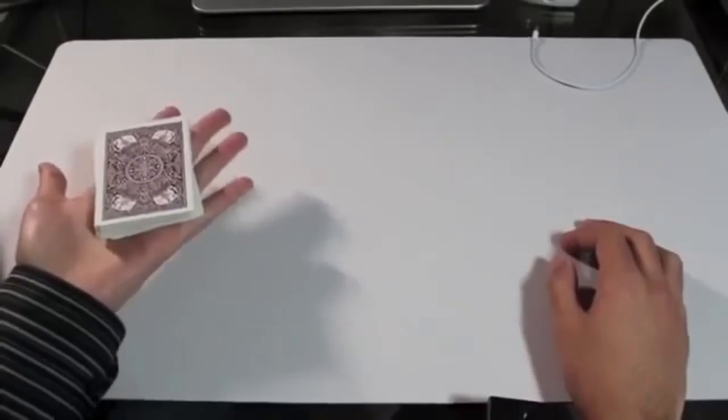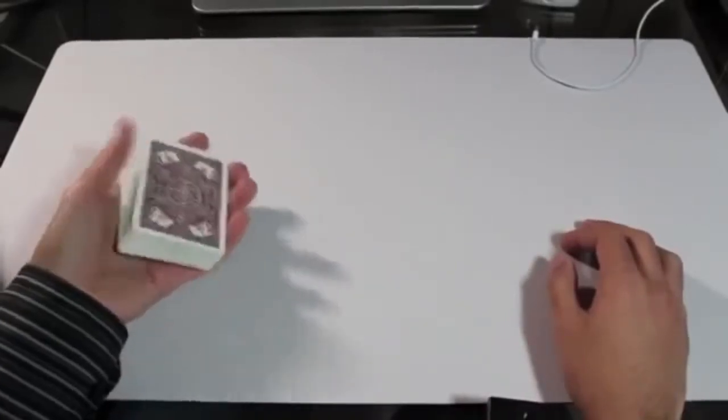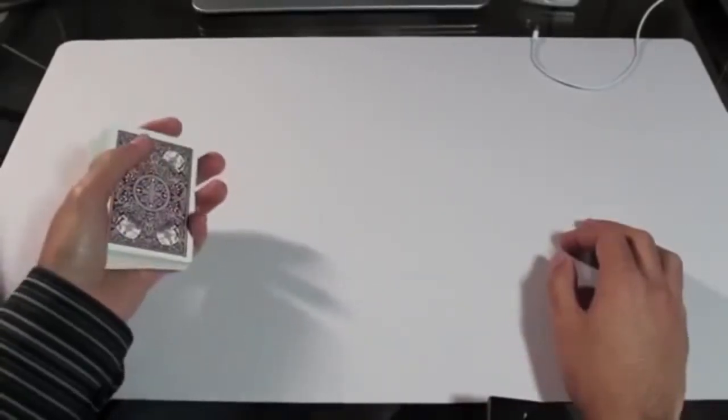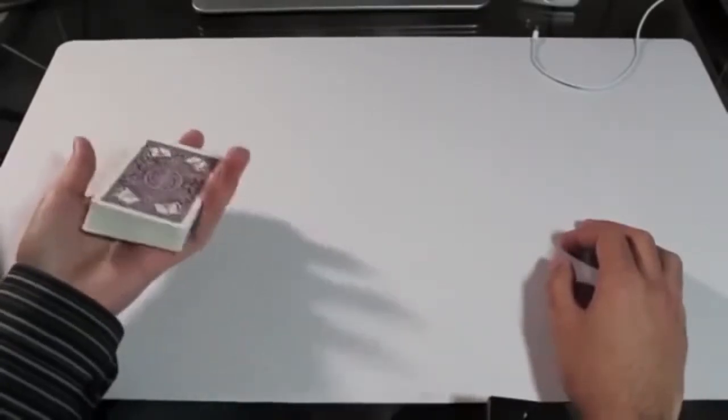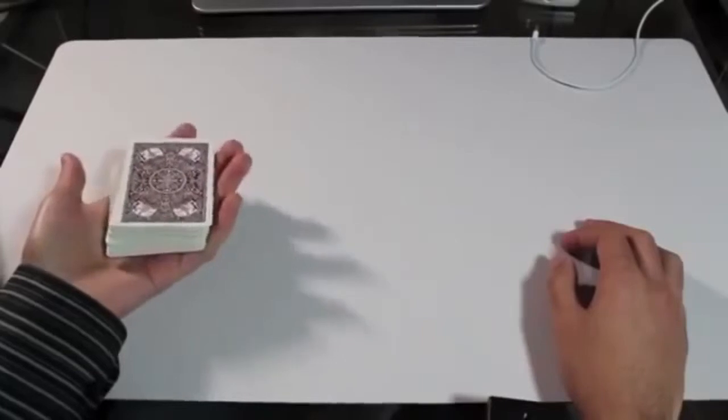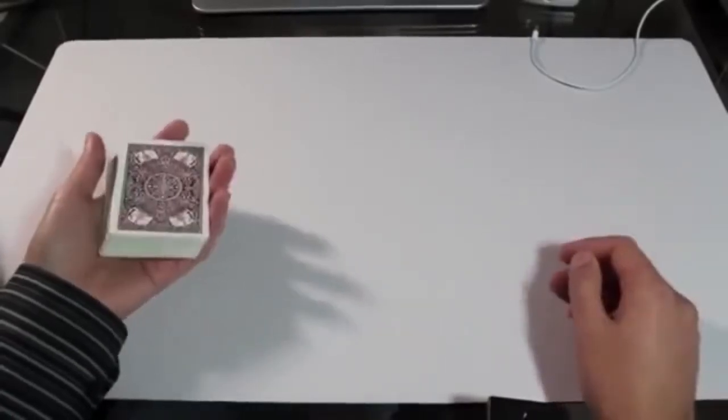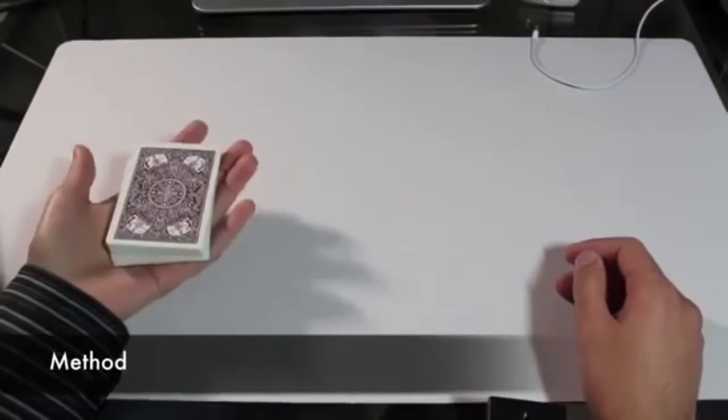The top shot, this is a flourish. It's a great way to demonstrate skill with a pack of cards. It's also a production. It's a really good way to find a chosen card. There's a lot of uses for it. You can think of your own. Let's talk about how to do it.